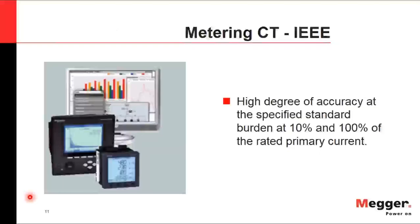For metering-type CTs according to IEEE, there is a high degree of accuracy at the specified standard burden at 10% and 100% of rated primary current. What we are looking at is a very specific and accurate measurement of current, and the transformation from primary to secondary has to be extremely accurate.